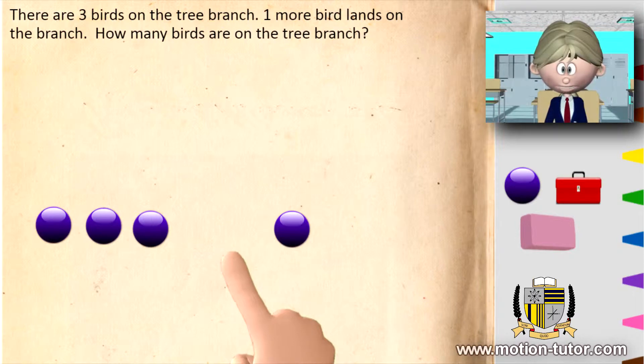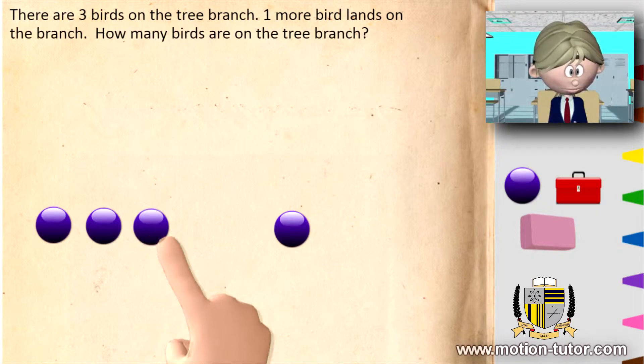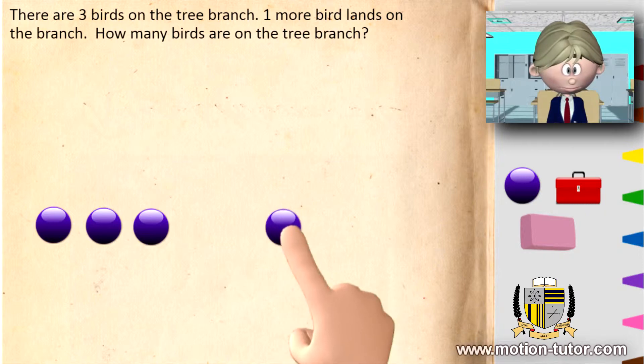And here is the one more bird. So how many birds are on the tree branch? We have one, two, three that were originally on the tree branch. And here's the one that joined them. So one, two, three, four.